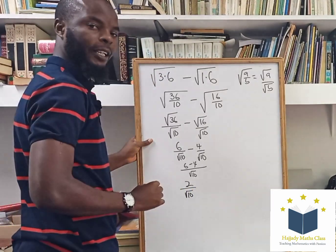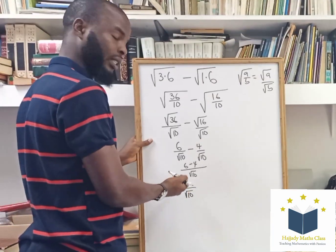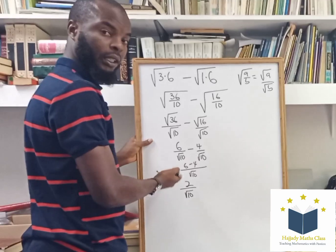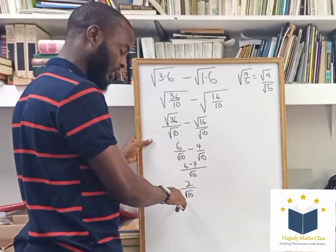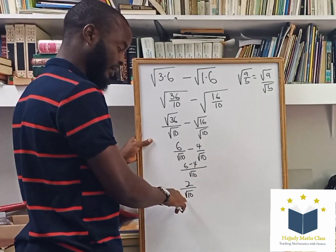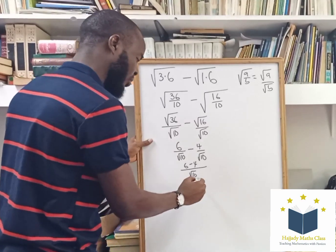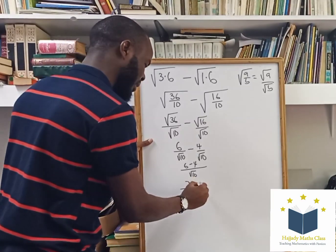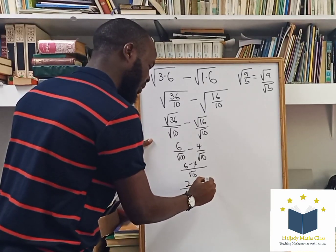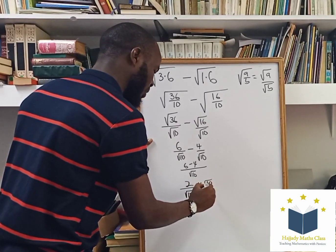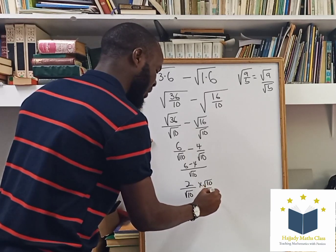As I always say, you can't just leave this in this form because you are having a radical as a denominator. So there's a need for us to rationalize, whereby we multiply by the denominator, which is root 10 over root 10.